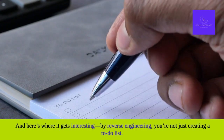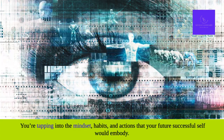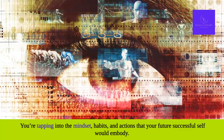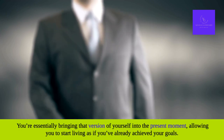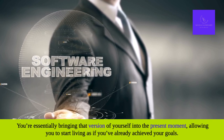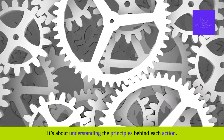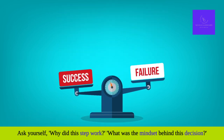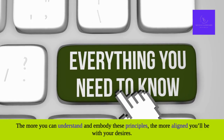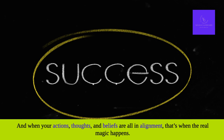This process might feel a bit weird at first, but it's incredibly powerful. By reverse engineering, you're not just creating a to-do list — you're tapping into the mindset, habits, and actions that your future successful self would embody. You're essentially bringing that version of yourself into the present moment, allowing you to start living as if you've already achieved your goals. This is next-level manifestation. Ask yourself why each step worked and what the mindset was behind each decision. The more you understand and embody these principles, the more aligned you'll be with your desires.